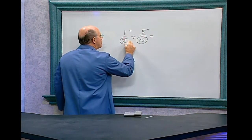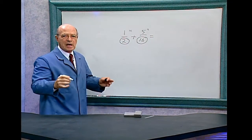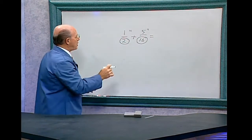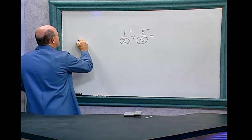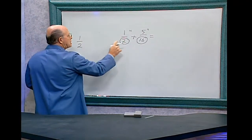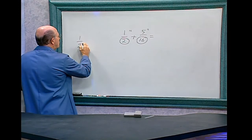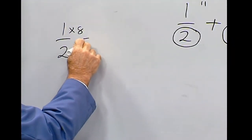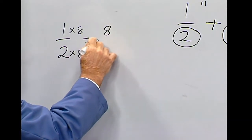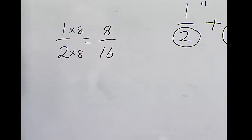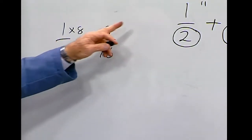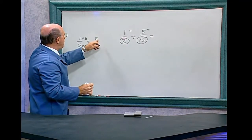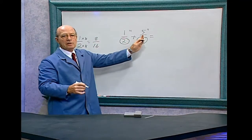This number and this number needs to be the same. So we have to convert 1/2 inch into sixteenths. Times 8, times 8 equals 8/16. Now by having 1/2 inches equal to 8/16, now we can add the two.